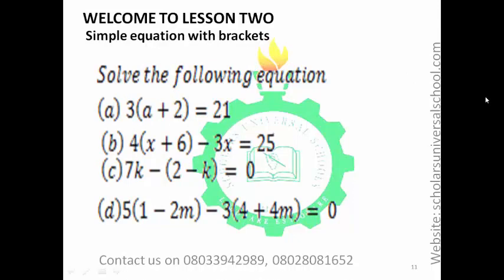Welcome to lesson 2 of simple equations with brackets. We want to solve equations that involve brackets. The equations are: (a) 3(a+2)=21; (b) 4(x+6)−3x=25; (c) 7k−(2−k)=0; (d) 5(1−2n)−3(4+4n)=0. We are going to pick each equation one after the other and solve it.